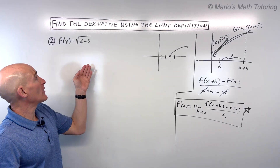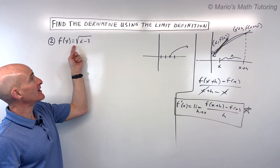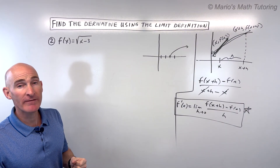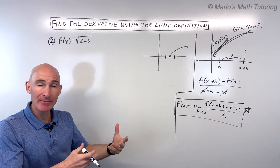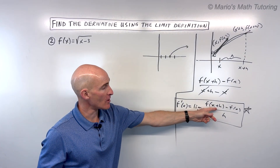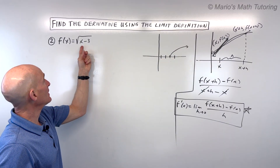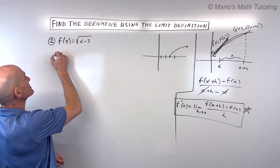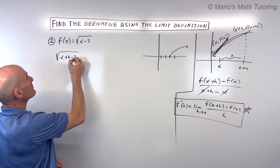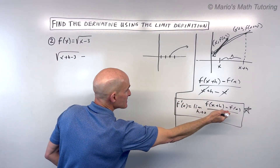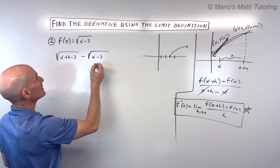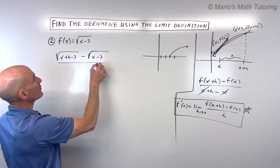For example number 2, we have the square root function: f of x equals square root of x minus 3. We want to find the derivative using the limit definition. We start by putting x plus h in for x. So this is going to be the square root of x plus h minus 3, minus f of x, which is the original function — square root of x minus 3 — all divided by h. And remember, it's the limit as h approaches 0.